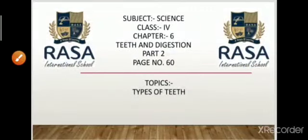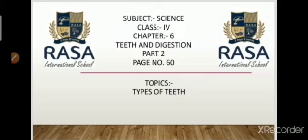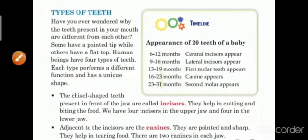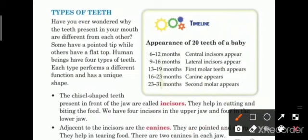Hello everyone, I welcome you on behalf of Rasa International School. I hope you all are doing good and safe at your homes. Today in this video we are going to continue our chapter number 6 of class 4, which is 'Teeth and Digestion.' We are going to discuss types of teeth, which is on your book page number 60. Have you ever wondered why the teeth present in our mouth are different from each other? We will discuss why they are different and how many types there are.